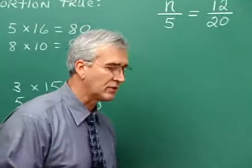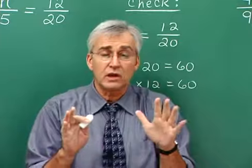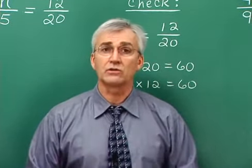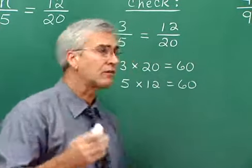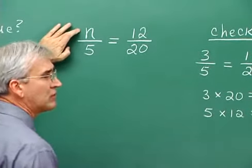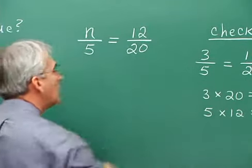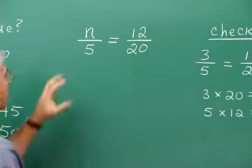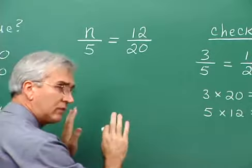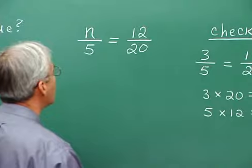It is most often the case that when we're dealing with proportions, we are trying to solve for something that's unknown in the two fractions — one of the numerators or one of the denominators. For example, we're trying to solve for this numerator: n is standing for some unknown value, and we want the value of n so that this proportion will be true. The product along the two diagonals must be equal, and that becomes the technique for solving the proportion for n.